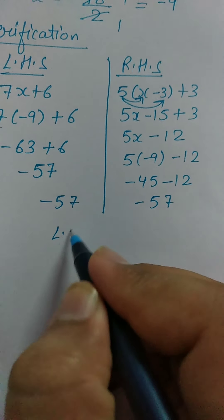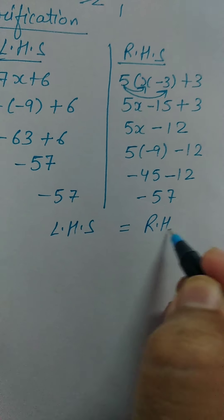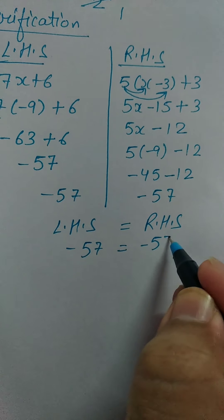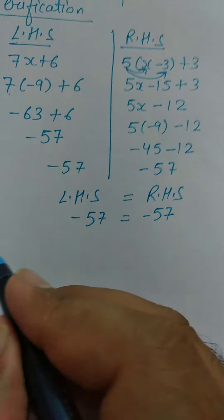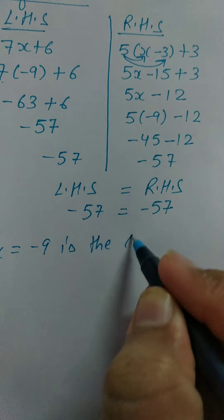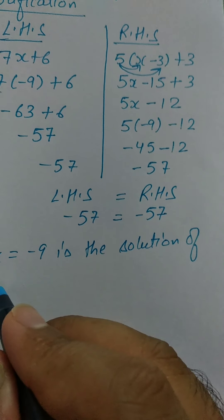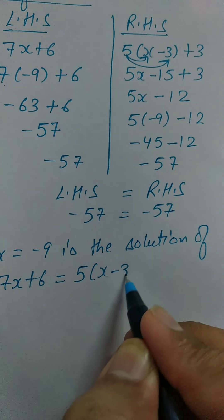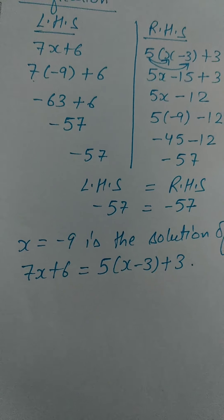So LHS is equal to RHS — minus 57 is equal to minus 57. So we can say that X is equal to minus 9 is the solution of 7X plus 6 equal to 5 in bracket X minus 3 plus 3. I hope it is clear to all of you.